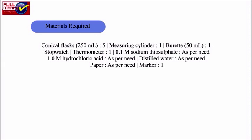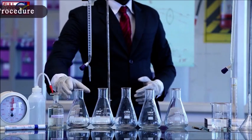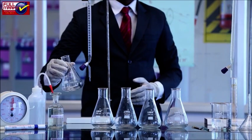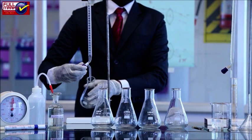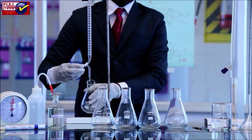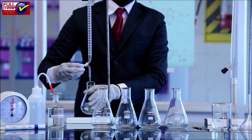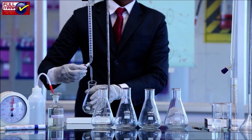Distilled water, paper, and a marker. Procedure: The rate of chemical reaction can be altered by changing the concentration of the reactants involved. If concentration of a reactant is increased, rate of reaction will increase and vice versa. In this experiment, you will study the reaction between sodium thiosulphate and hydrochloric acid and the effect of change in concentration of sodium thiosulphate on the rate of reaction.